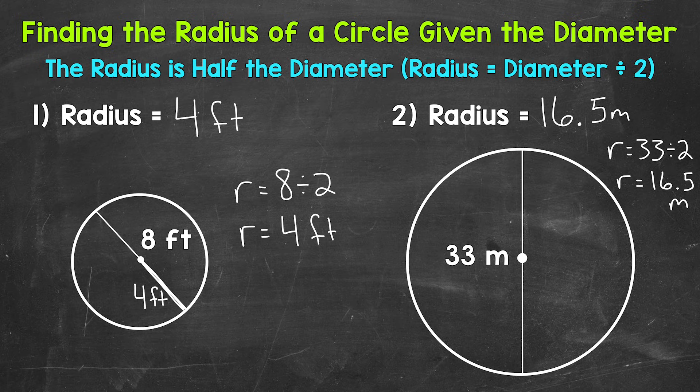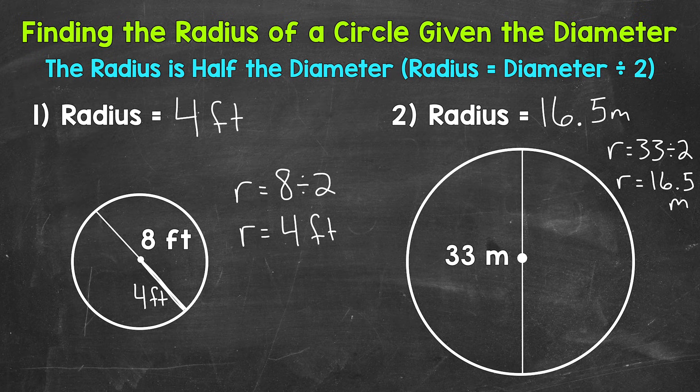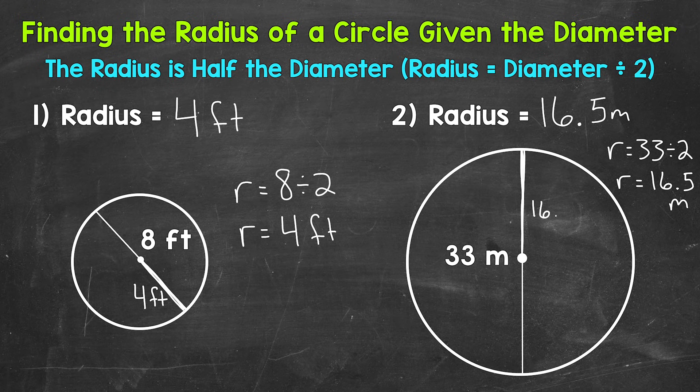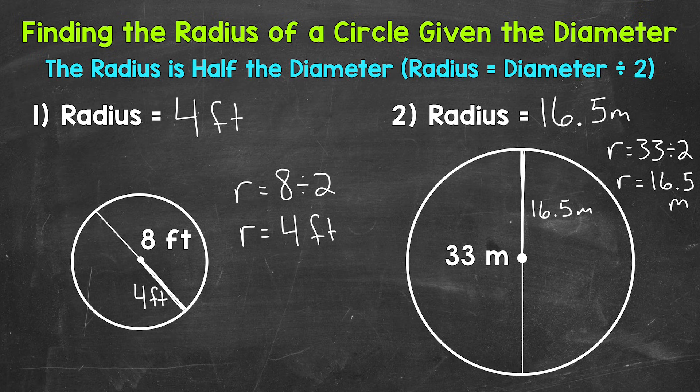So the measure of the radius, the distance from the center of the circle to any point on the circle, for example right here. This is going to be 16 and a half meters. So 16 and a half meters or 16.5 meters.